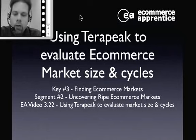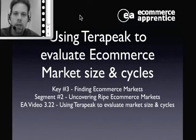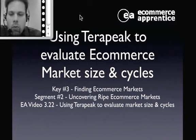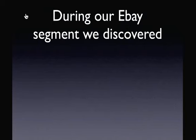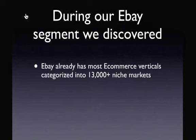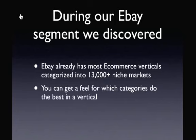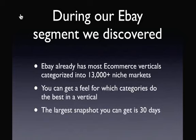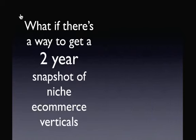In our previous video, we talked through how eBay is the perfect repository for how ecommerce markets, niches, and verticals are categorized on the internet when they become large enough to handle their own category. Now we're going to go one step further with this system called Terapeak. During our eBay segment, we discovered that eBay already has most ecommerce verticals categorized into 13,000-plus niche markets, and you can get a feel for which categories are doing best in each vertical.